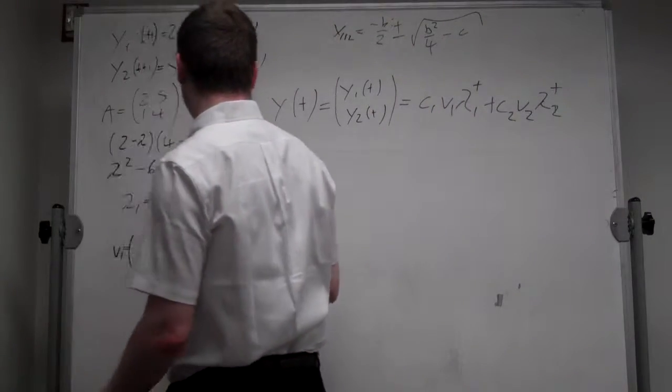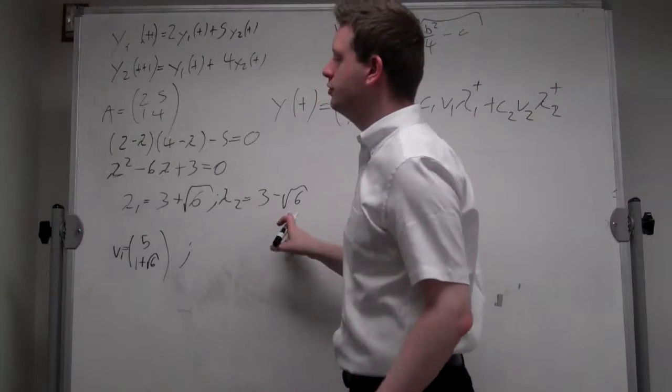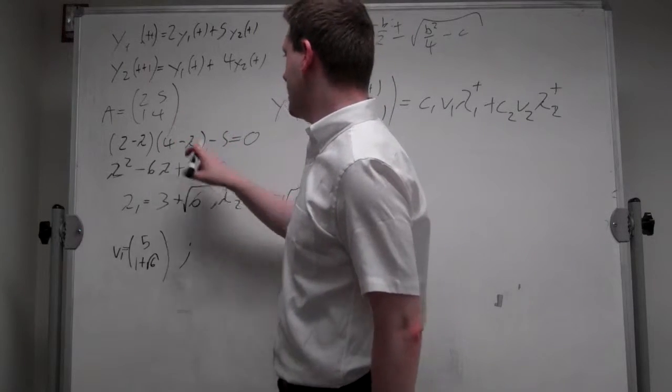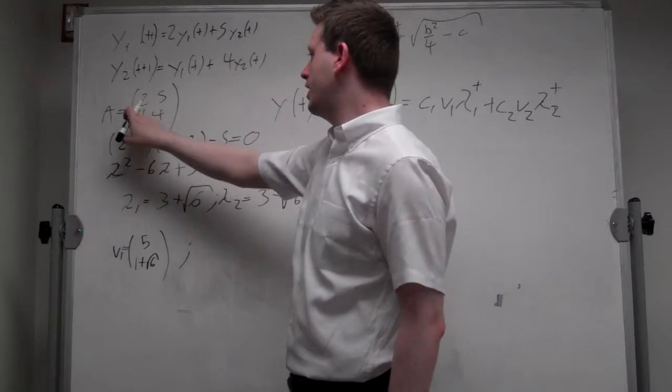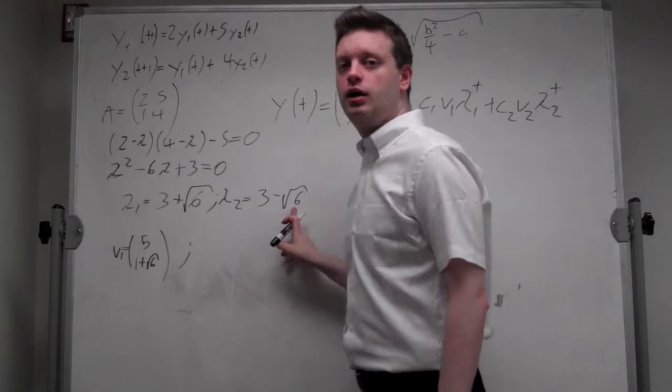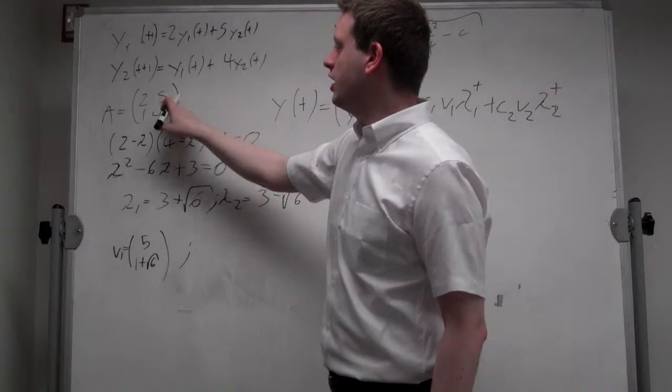For v_2, so the second eigenvector, we do the same here. So we subtract lambda from the diagonal, and we get minus 1 plus square root of 6, 5, 1, 1 plus square root of 6.